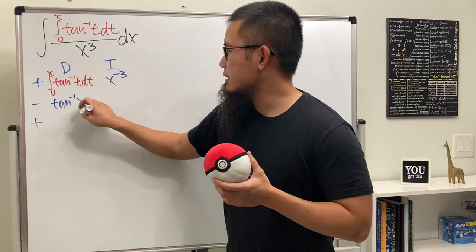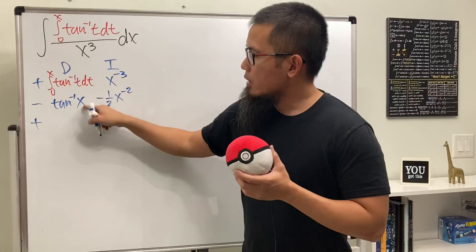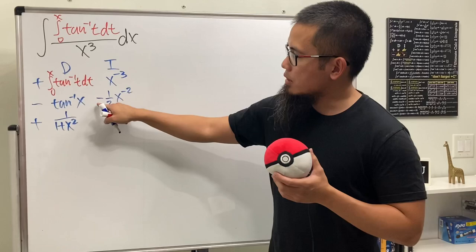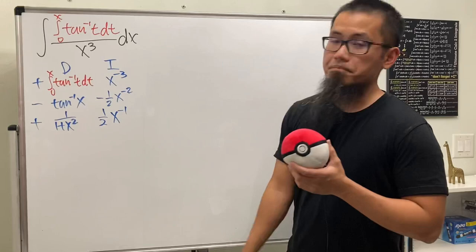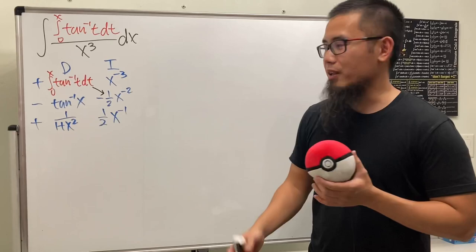Thanks to the Fundamental Theorem of Calculus Part 1, differentiating the integral from zero to x of arctan(t) dt gives us inverse tangent of x. Then integrating x to the negative three, we add one to the power to get x to the negative two. For the next row, differentiating arctan(x) gives one over one plus x squared, and integrating x to the negative two gives x to the negative one divided by negative one, which is one half times x to the negative one.